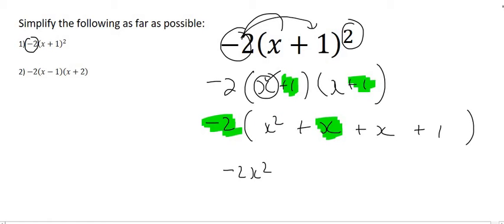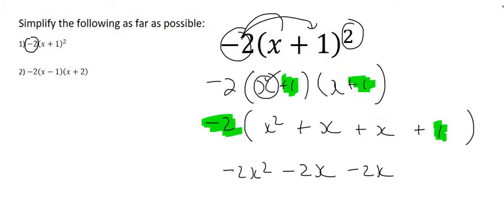Then we're going to multiply minus 2 and x and that's just going to give us minus 2x. There's another minus 2 times by x which is going to be minus 2x again. And then minus 2 times by positive 1 is minus 2.